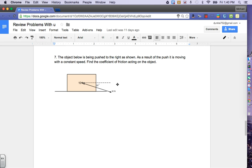Let's take a look at number seven and eight on the forces review problems with the coefficient of friction. Number seven, the object below is being pushed to the right as shown in the picture. As a result of the push, it is moving with a constant speed. That's important. We're now going to be trying to find the coefficient of friction acting on the object.